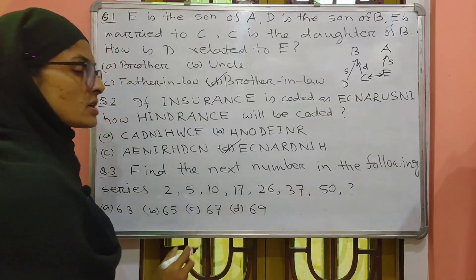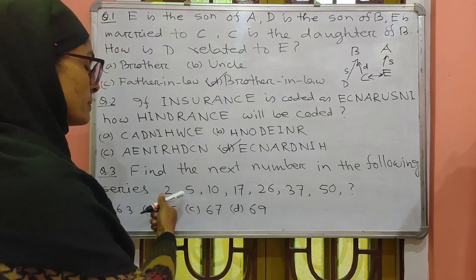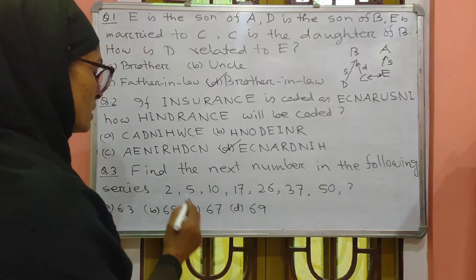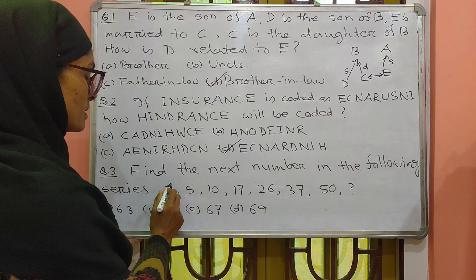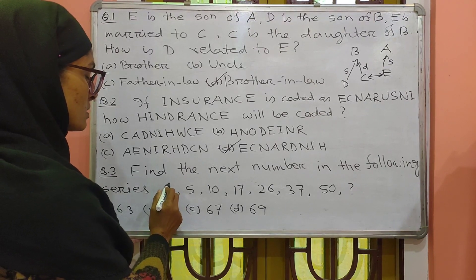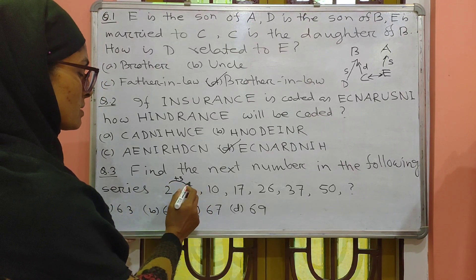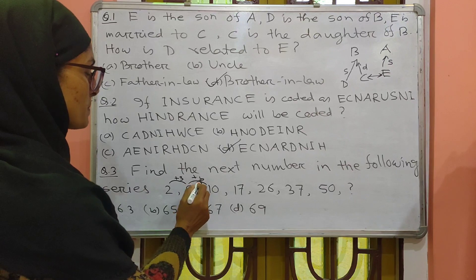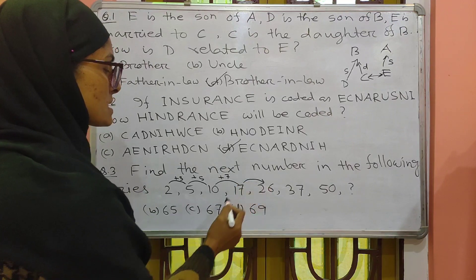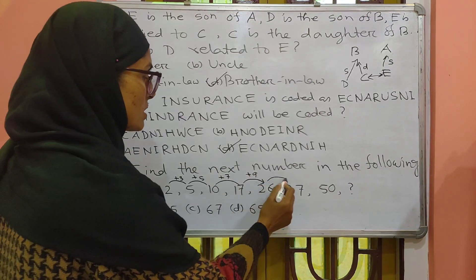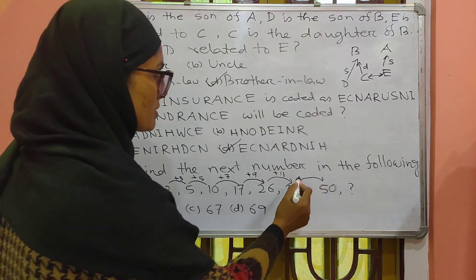In this series there is a particular rule. Different types of rules apply. From 2 to 5, the difference is plus 3. From 5 to 10, plus 5. From 10 to 17, plus 7. From 17 to 26, plus 9. From 26 to 37, plus 11. From 37 to 50, plus 13. The next difference will be plus 15.